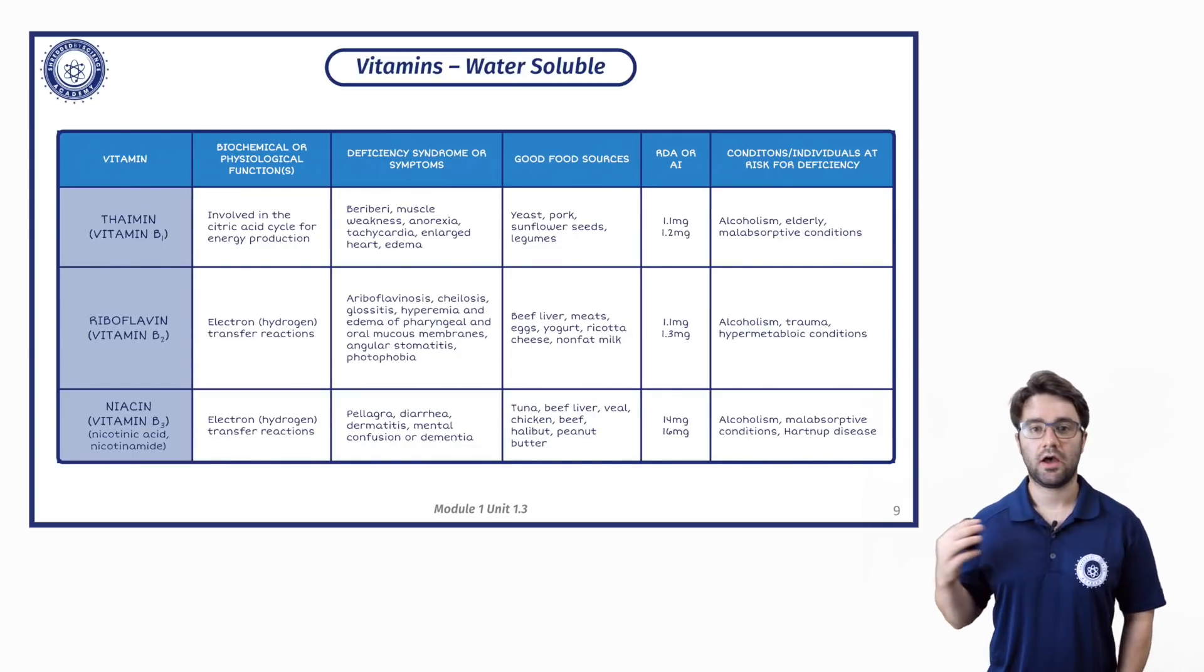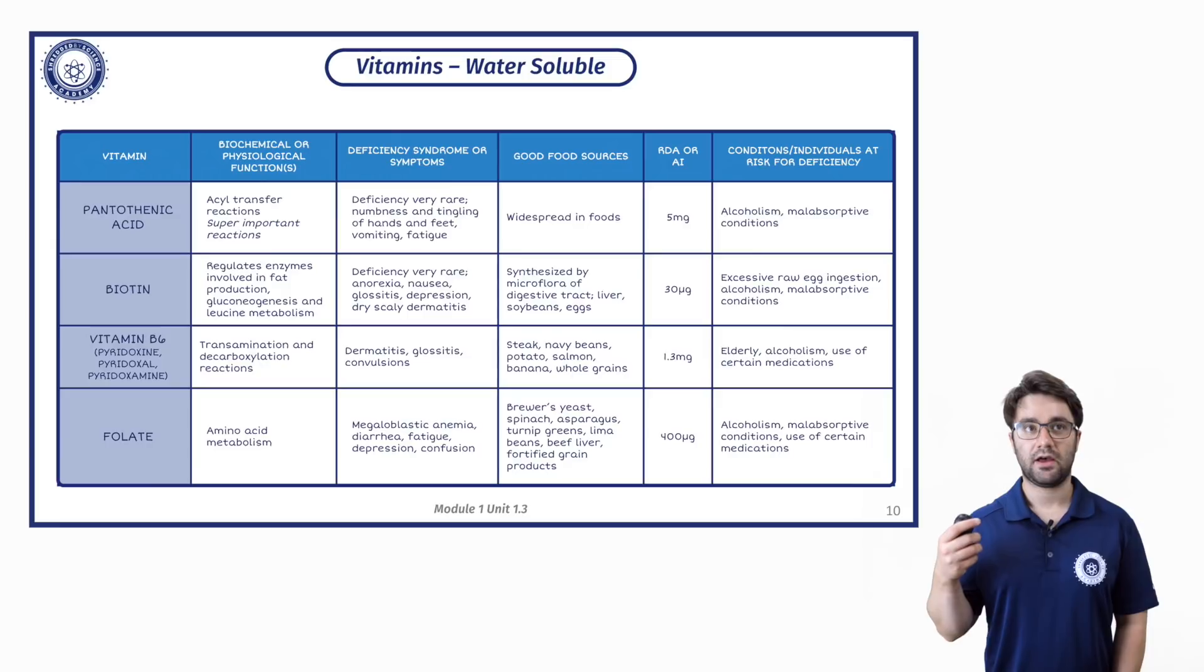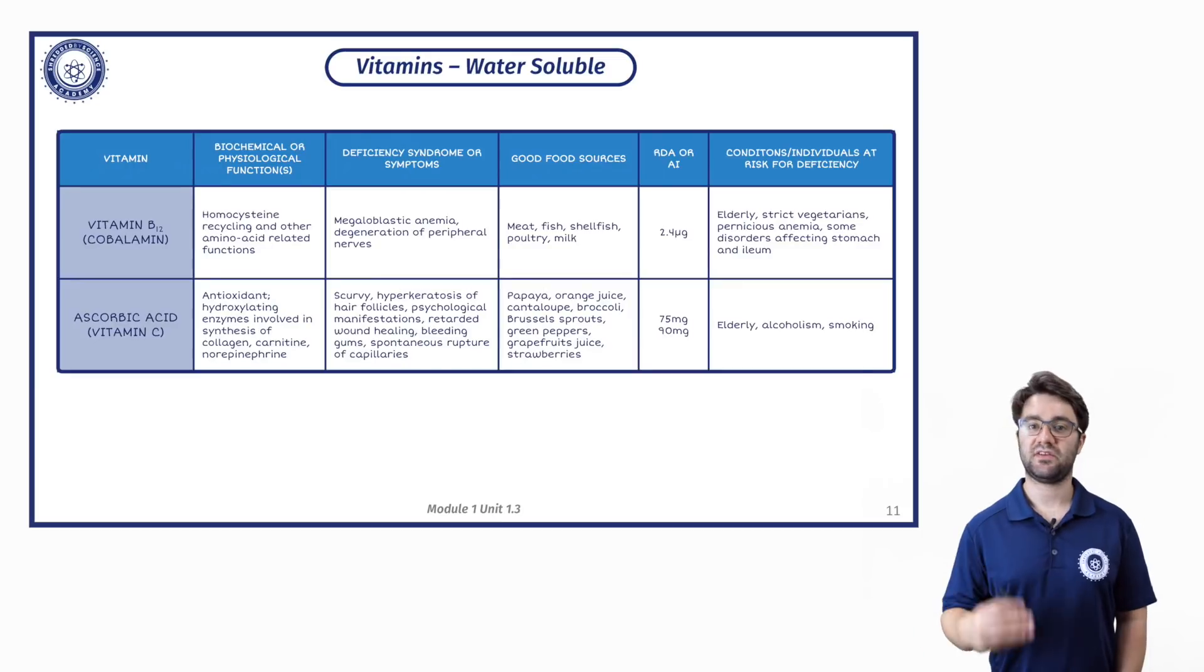When it comes to the water-soluble vitamins, we have all of the B vitamins, so vitamin B1, B2, B3, B6. We then have pantothenic acid, biotin, folate, and then B12 and vitamin C.